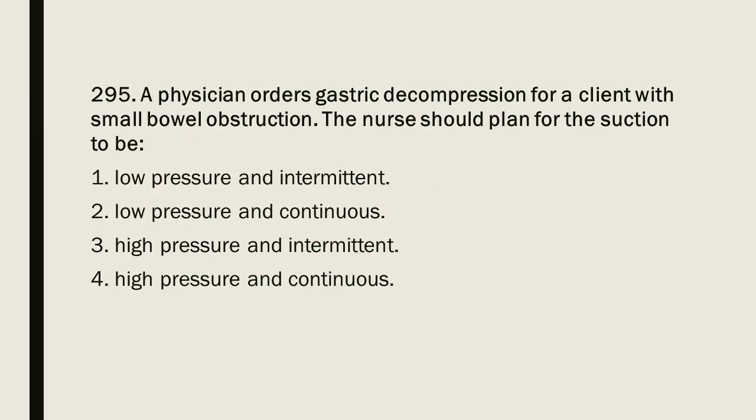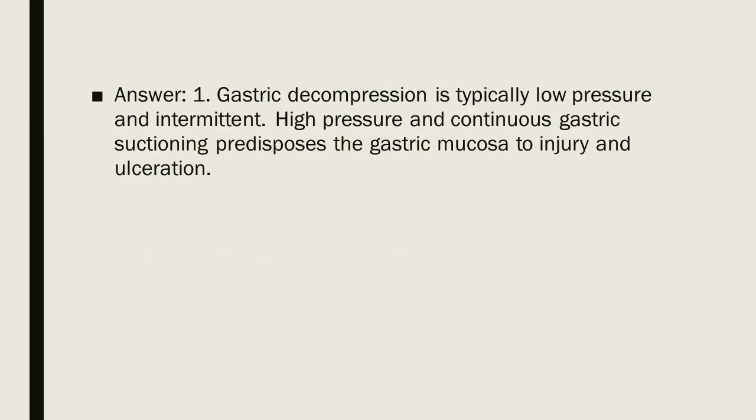Question 295: A physician orders gastric decompression for a client with small bowel obstruction. The nurse should plan for the suction to be: 1. Low pressure and intermittent. 2. Low pressure and continuous. 3. High pressure and intermittent. 4. High pressure and continuous. Answer: 1. Gastric decompression is typically low pressure and intermittent. High pressure and continuous gastric suctioning predisposes the gastric mucosa to injury and ulceration.